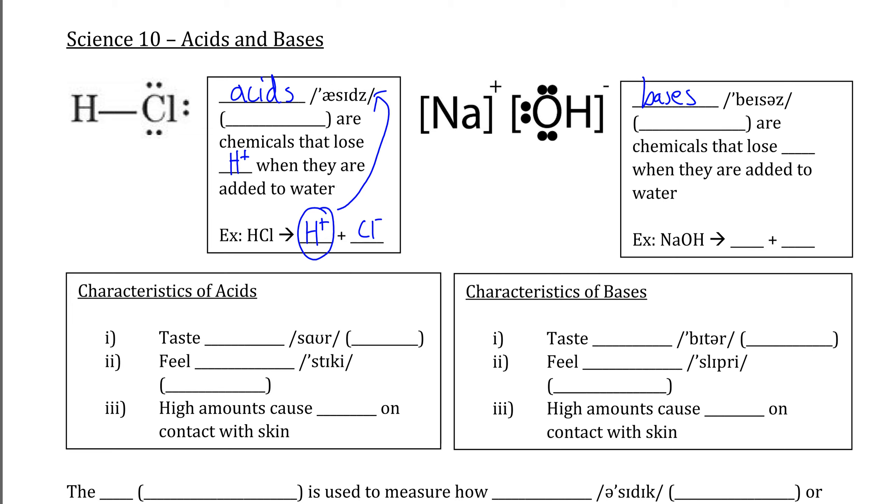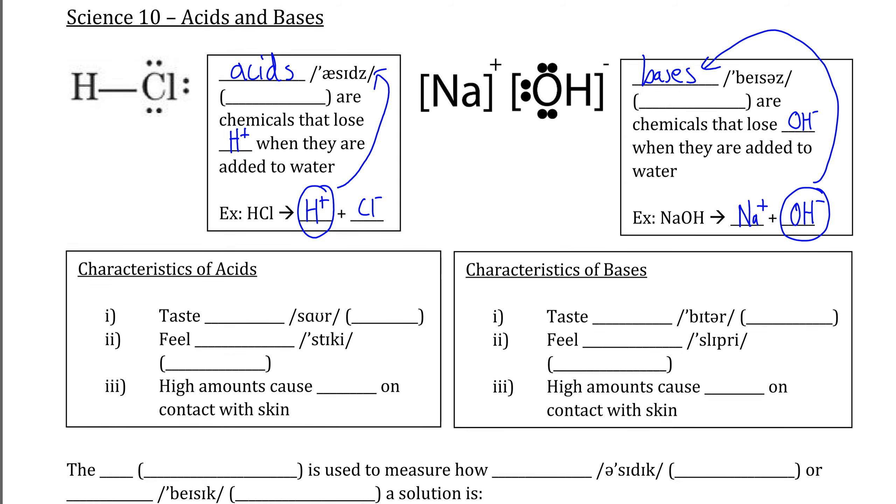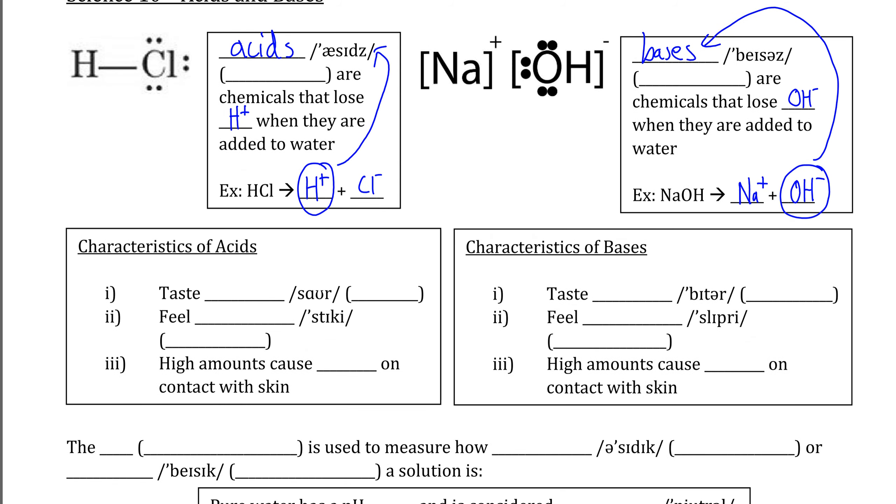Conversely, when we put bases into water, we can see that NaOH does not contain a hydrogen by itself. Bases are compounds that lose an OH- from their structure when added to water. So in water, NaOH would separate into a sodium ion and the polyatomic ion hydroxide. The fact that the hydroxide is there is what makes NaOH a base.